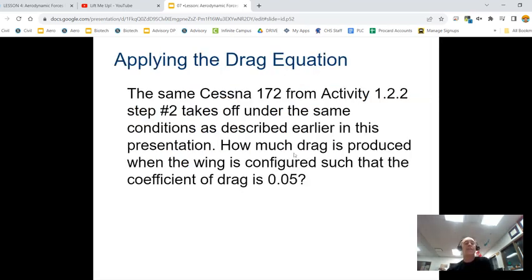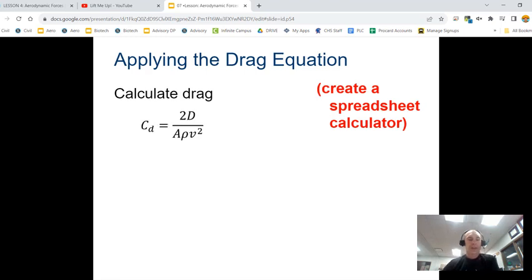So if we have the same Cessna 172 from that activity in step two, it takes off under the same conditions how much drag is produced. So if we calculate this out, we have CD equals 2D over A rho V squared. But we want to calculate drag. So this is where, and I know you don't have the values probably for that previous one, this is where you may need to rearrange the equation.